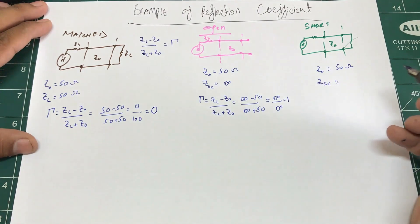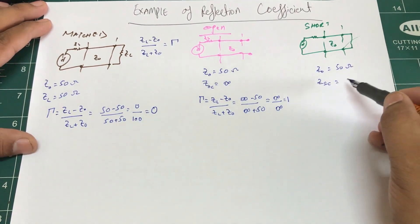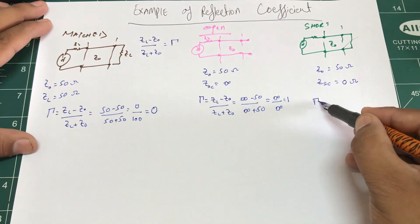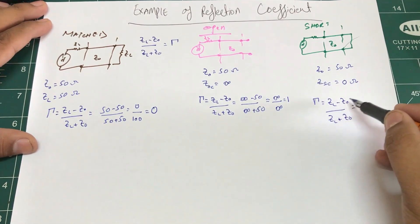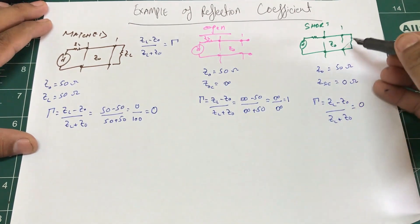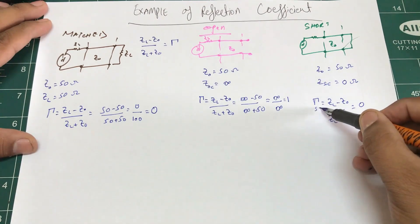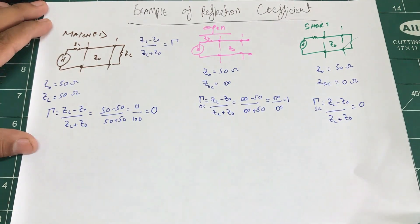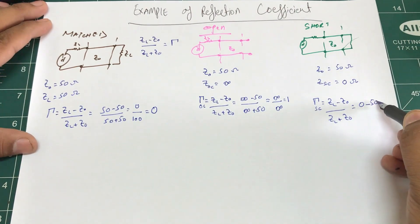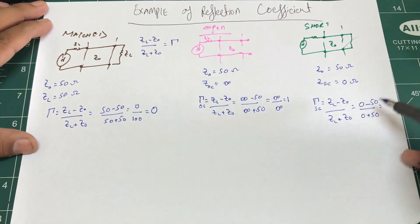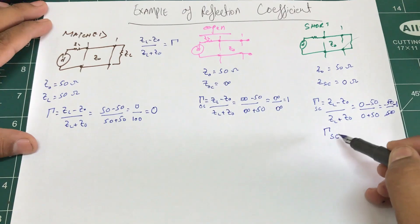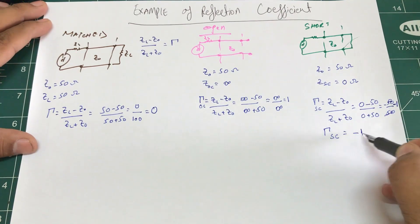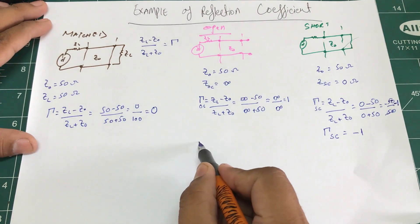For a short circuit, the impedance is zero ohms. Plugging into the formula: ZL minus Z0 over ZL plus Z0 gives 0 minus 50 over 0 plus 50, which is negative 50 over 50. So the reflection coefficient for a short circuit is negative one.